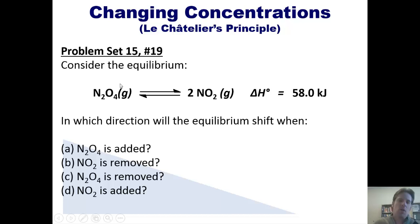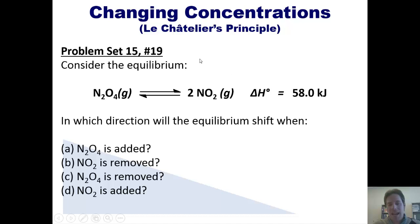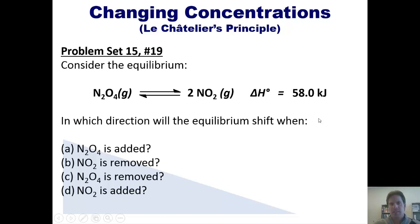What happens if I remove N2O4? Now I have a gaping hole on the left side of the equation. In order to restore the N2O4 that has been lost, NO2 has to convert into N2O4. So the equilibrium in that circumstance is going to shift to the left. And what happens if NO2 is added? Now I have a lopsided amount on the right side of the equation. We have to get rid of the excess NO2 and produce some N2O4. So in this circumstance, the equilibrium is also going to shift to the left.